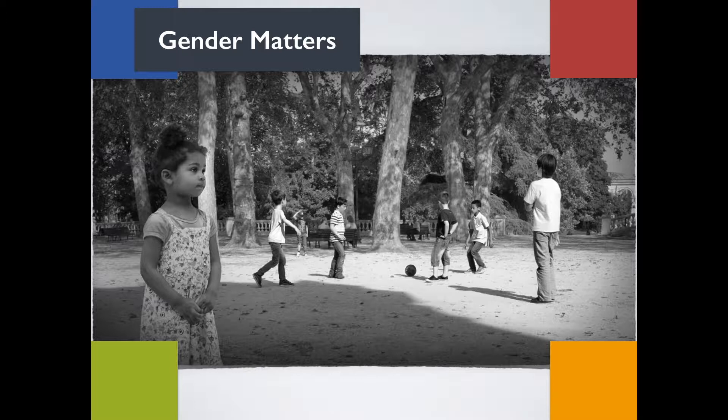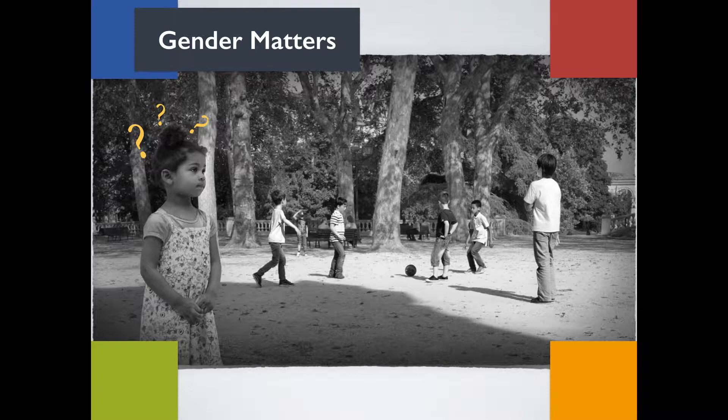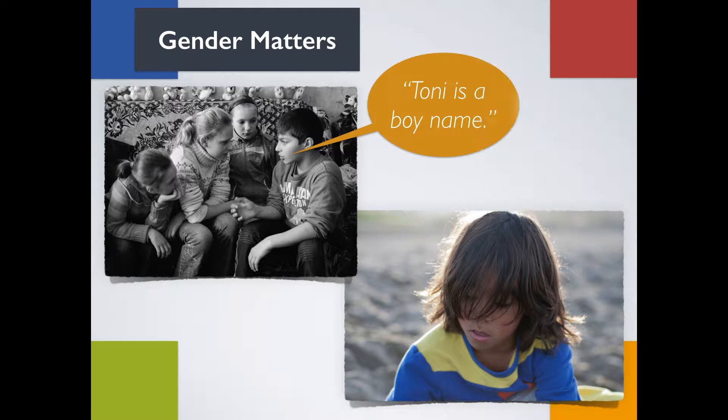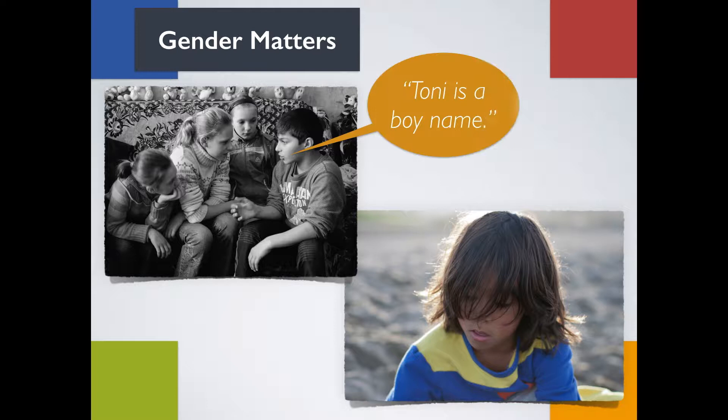Here's an example of Kohlberg's theory of what a young child may think during outdoor playtime: Jessica thinks to herself, if I play ball with the boys on the playground and get my hair cut short, I will become a boy. You may also relate to children saying things like, 'Tony is a boy's name,' or 'James has long hair like a girl.' These statements form because children process learned information based on what they see and hear during social interactions and how adults respond.